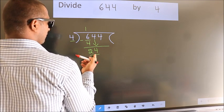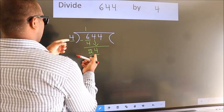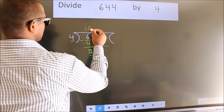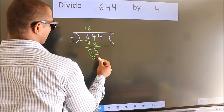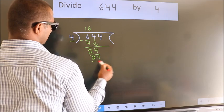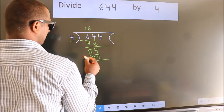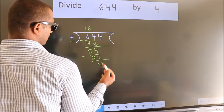When do we get 24 in the 4 table? 4 times 6 is 24. Now we subtract — we get 0.